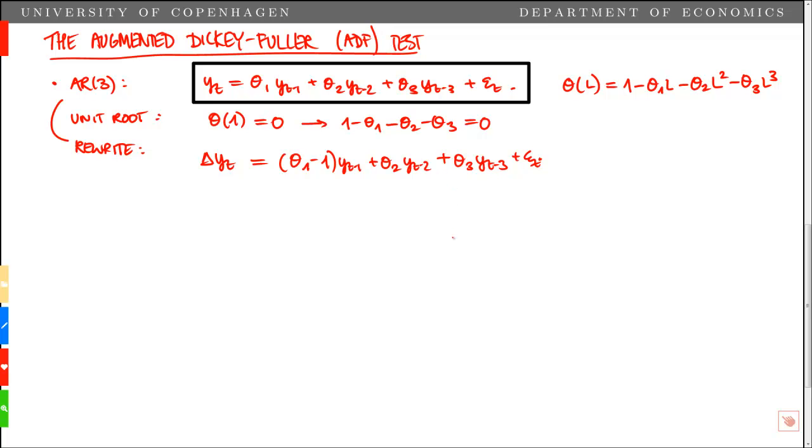We want to derive a representation where we only have the lag level, and then we have a set of lag first differences. The first thing we do is add and subtract to this equation theta3 multiplied by yt-2. Then we rewrite the model and put the minus in front, and we get minus theta3 times (yt-2 minus yt-3), finally plus epsilon t.